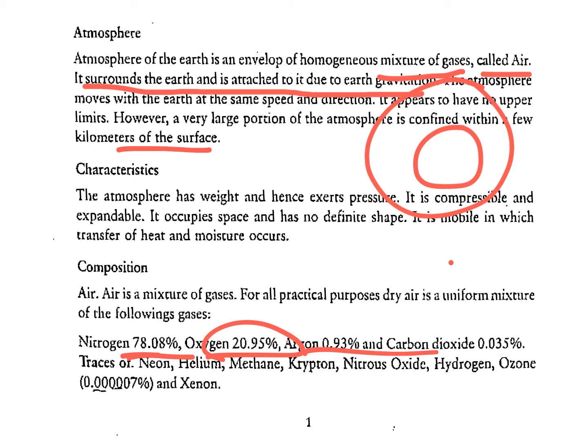The composition of air: air is a mixture of gases. For all practical purposes, dry air is a uniform mixture of the following gases — nitrogen: 78.08%, oxygen: 20.95%, and argon and carbon dioxide: 0.35%. The trace gases are neon, helium, methane, krypton, nitrous oxide, hydrogen, and xenon.